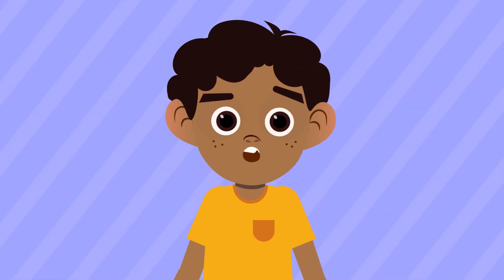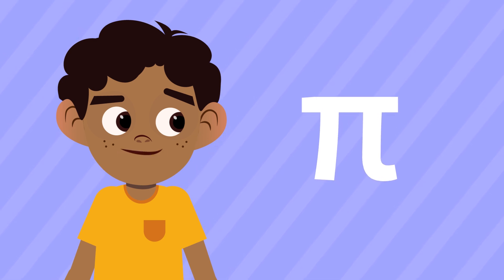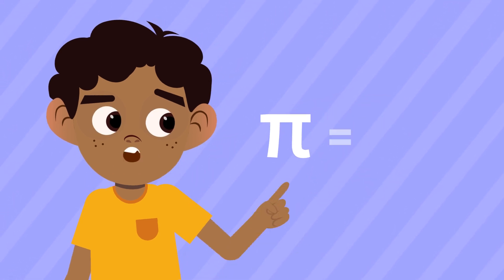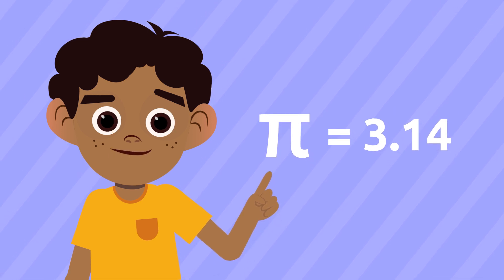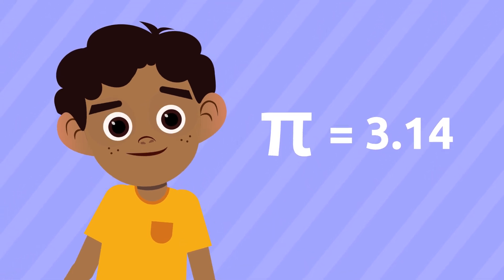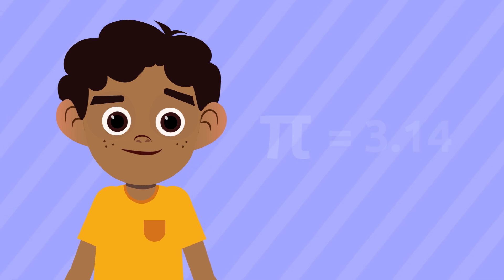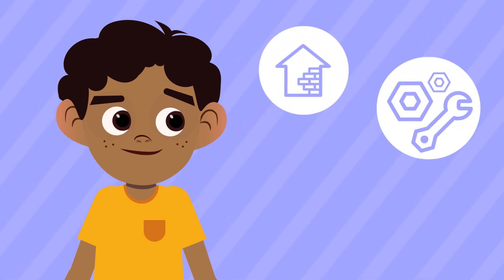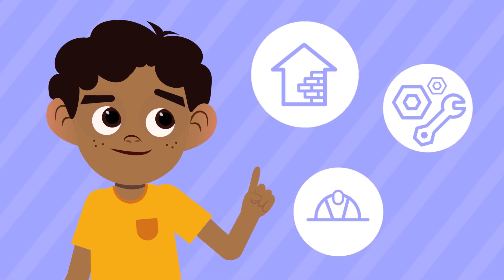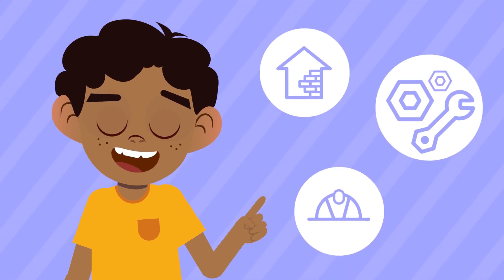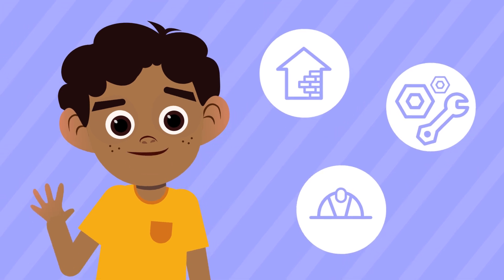For every circumference in the world, pi is always the same number — that is to say, it equals 3.14. If you want to learn more about it, watch our video about the number pi. As you have seen, knowing how to calculate the length of a circumference is very important in construction, mechanics, or engineering. How would you like to try with another example?